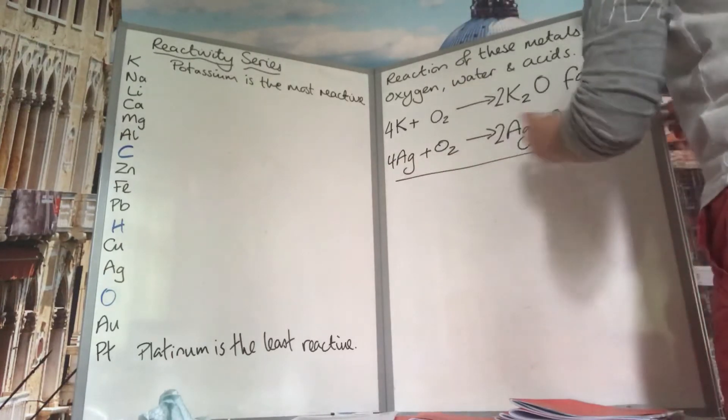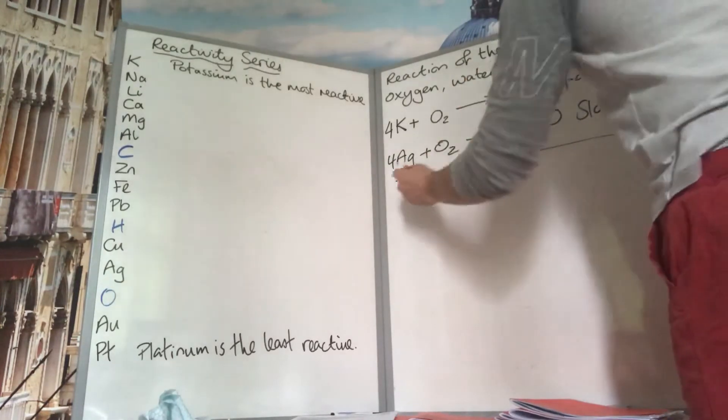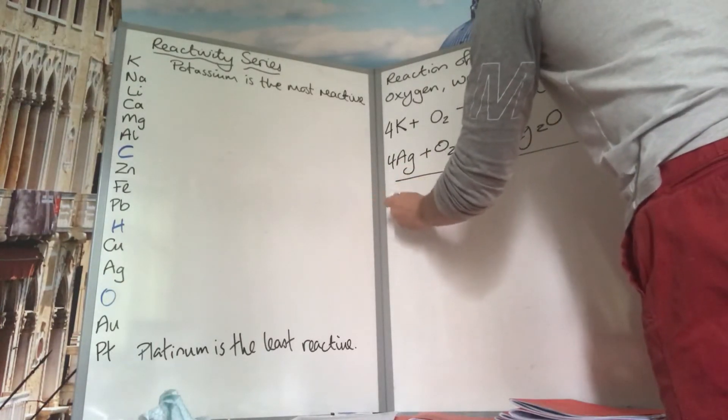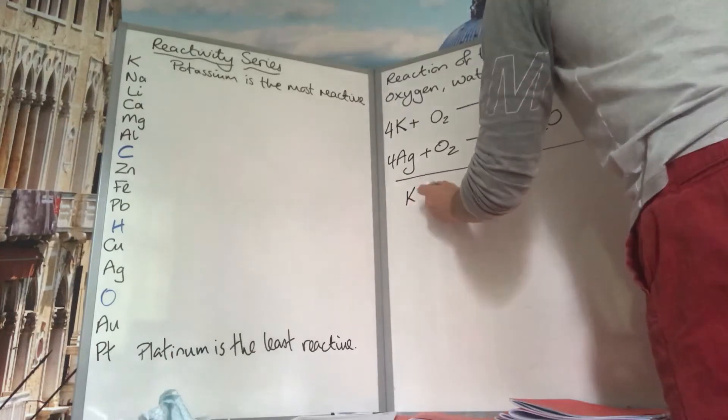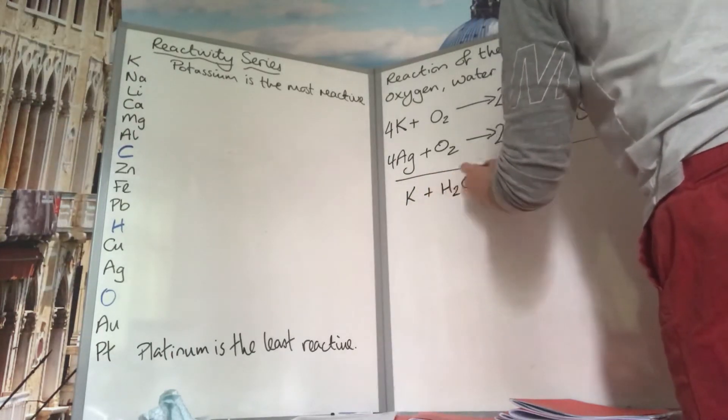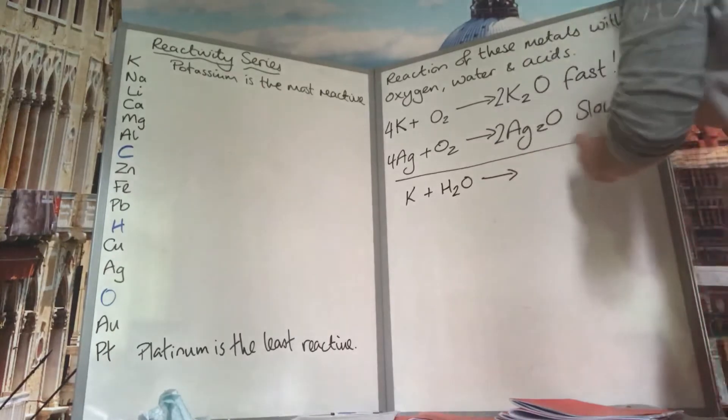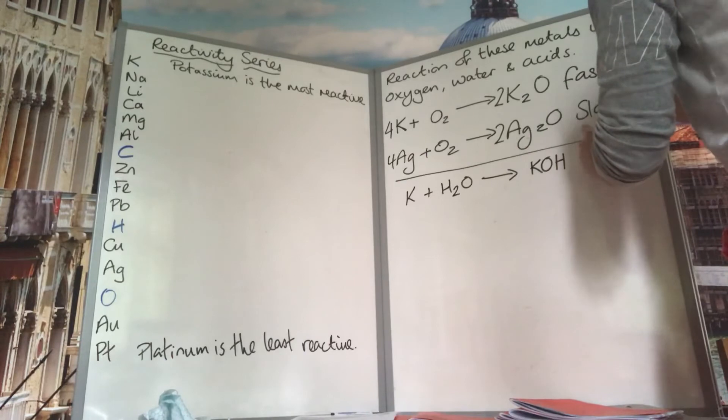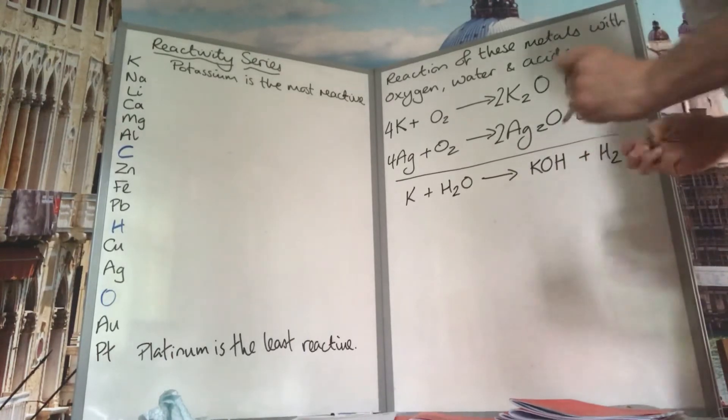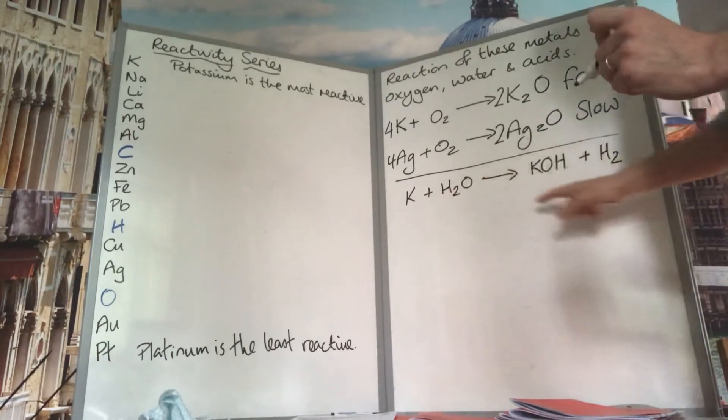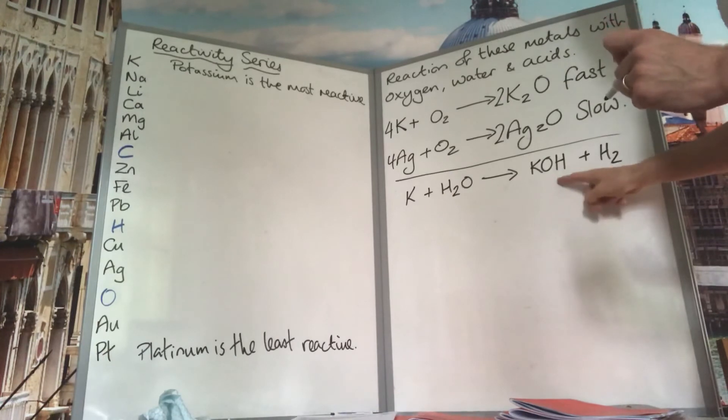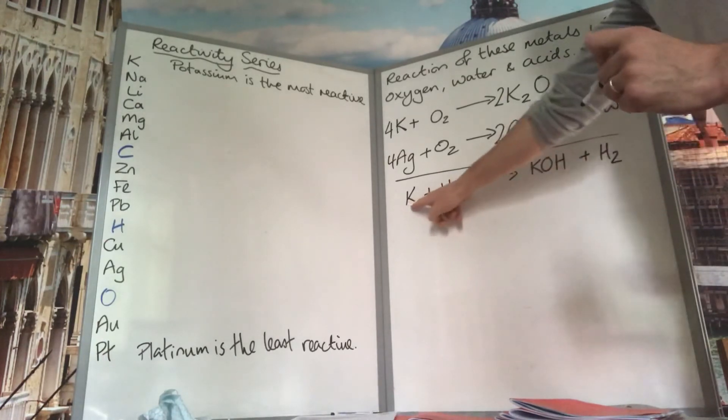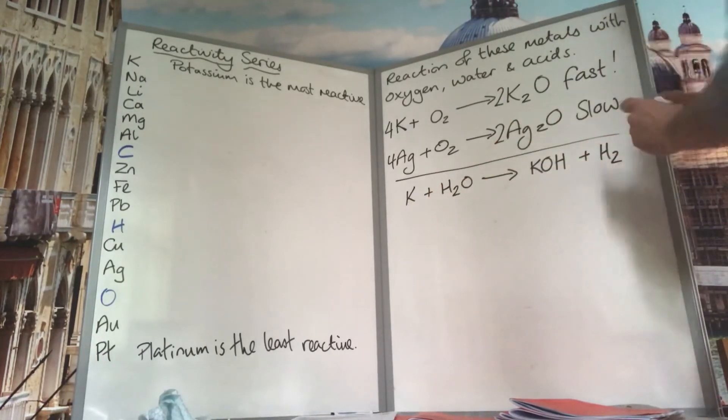Let's now look at water. So if we take potassium again and we react it with water, it's going to react to give potassium hydroxide and hydrogen gas. We've done this in the classroom, you've seen this as a demo. This reacts really violently, so it's a very fast reaction again.